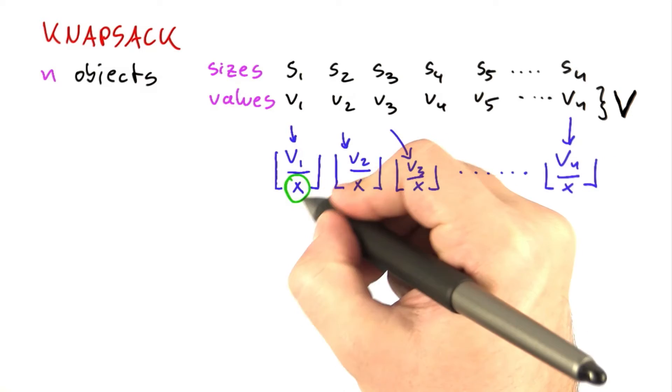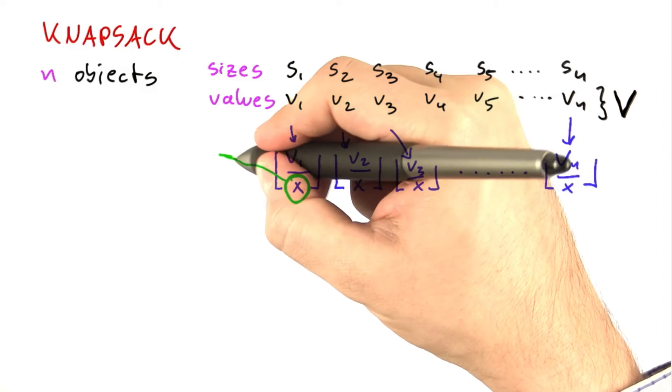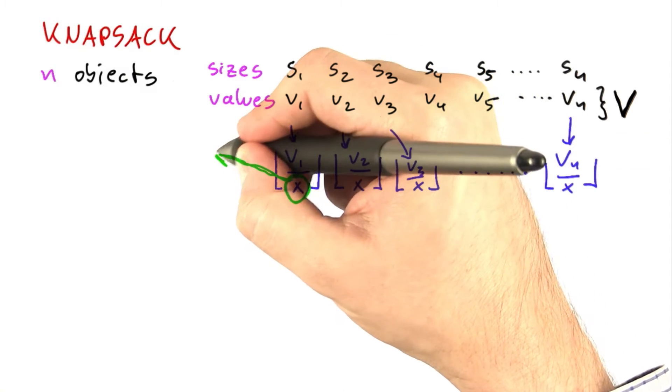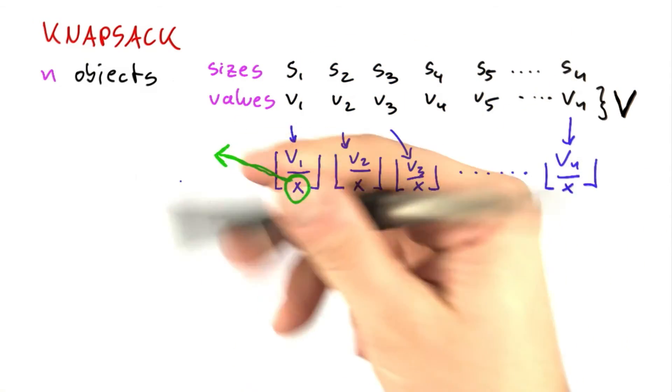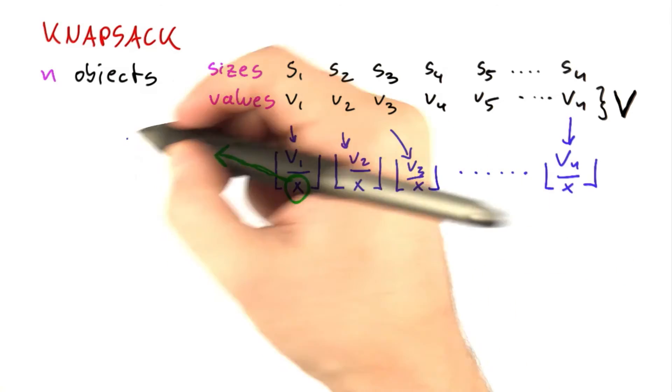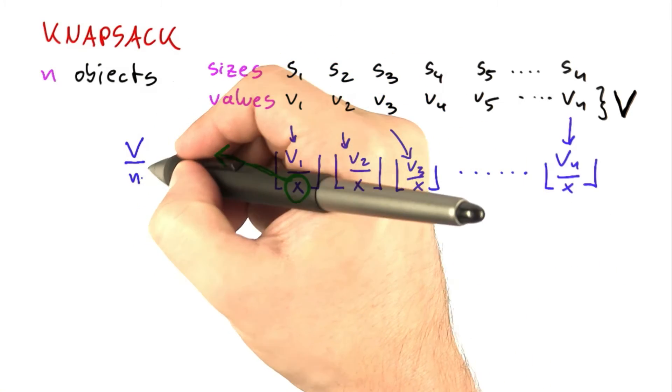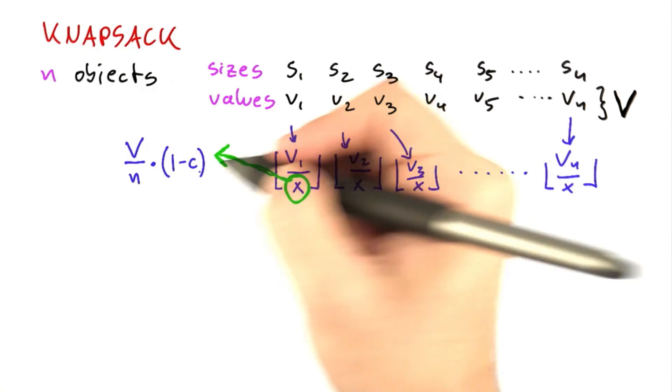So what value do we use here for the x? Well, of course, that takes a bit of either playing around or pre-knowledge. In this case, we'll set this x here, and we're going to set this to v over n times 1 minus c.